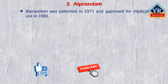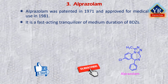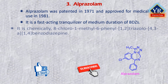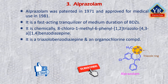The next drug is alprazolam. Alprazolam was patented in 1971 and approved for medical use in the US in 1981. It is a fast-acting tranquilizer of medium duration in the benzodiazepine class. Chemically, it is 8-chloro-1-methyl-6-phenyl-1,2,4-triazolo[4,3-a][1,4]benzodiazepine. As the benzodiazepine structure is fused to a triazole ring, it belongs to the triazolobenzodiazepine category and is also an organochlorine compound.